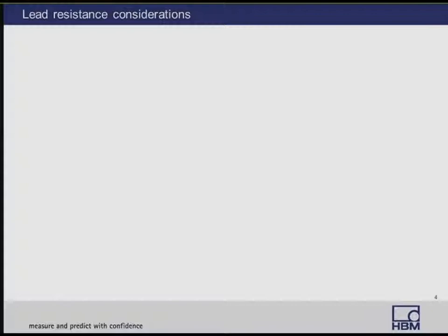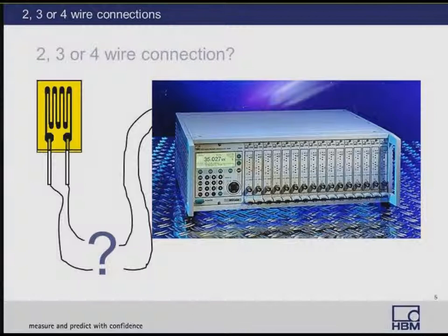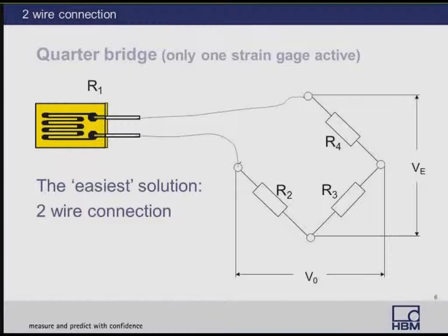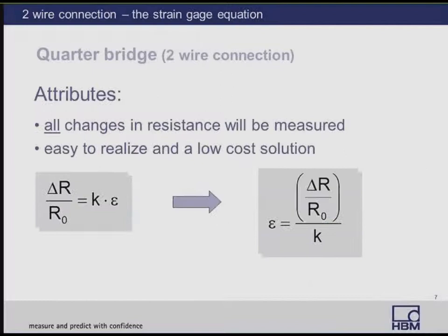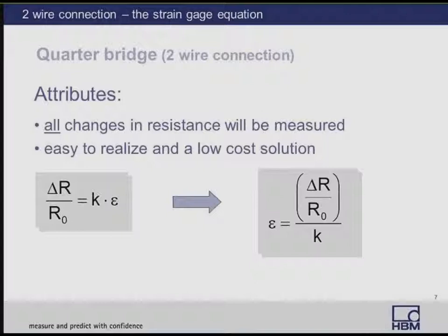When making a strain gauge measurement, which should you use: two-wire, three-wire, or four-wire? The easiest solution is a two-wire connection into the Wheatstone bridge. With a two-wire connection, all changes in resistance will be measured. It's easy to connect and the lowest cost solution. The standard strain gauge equation finds that the relative change of resistance is proportional to the strain applied. The gauge factor K is expressed as the ratio of relative change of resistance to strain: ΔR/R = K × ε, or equivalently, ε = (ΔR/R) / K.